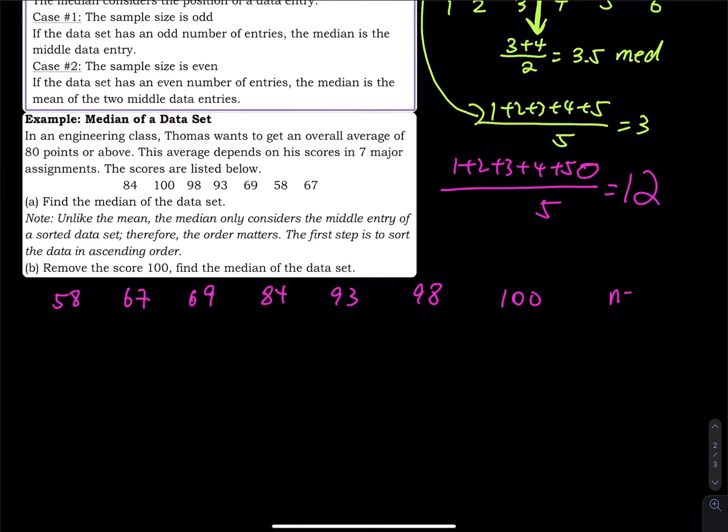So the sample size is seven, is odd. Then the median is the middle entry. Here is the median, 84. So we have three numbers on the left, three numbers on the right. The 84 divides the entire data set into two equal pieces.